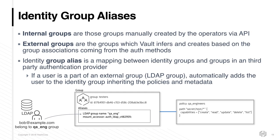An identity group alias is used to maintain a mapping between a Vault identity group and a group held externally by a third-party authentication provider. If a user is a member of an external group, such as an LDAP group, then the user will be automatically added to the Vault identity group, assuming the group alias is in place, and therefore will inherit the policies and metadata associated with the Vault identity group.